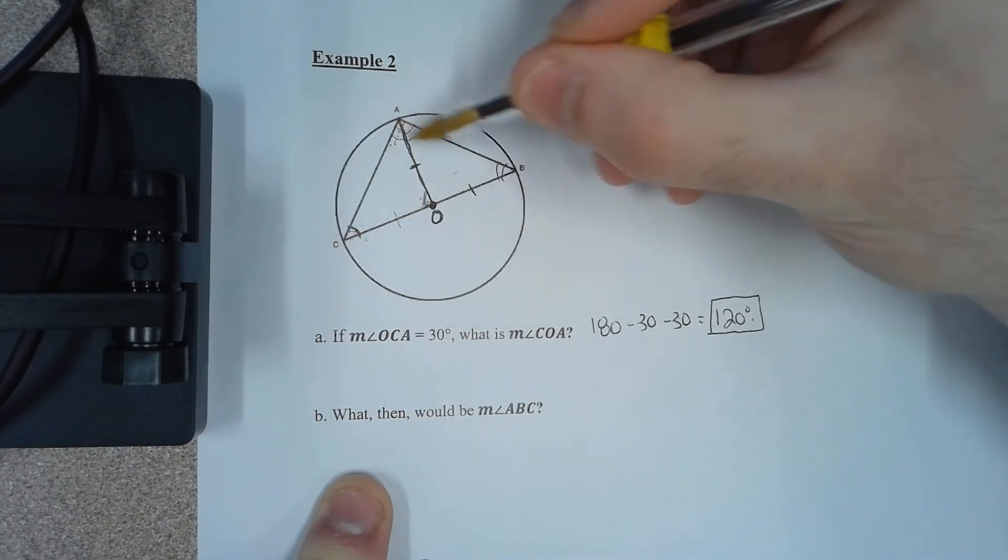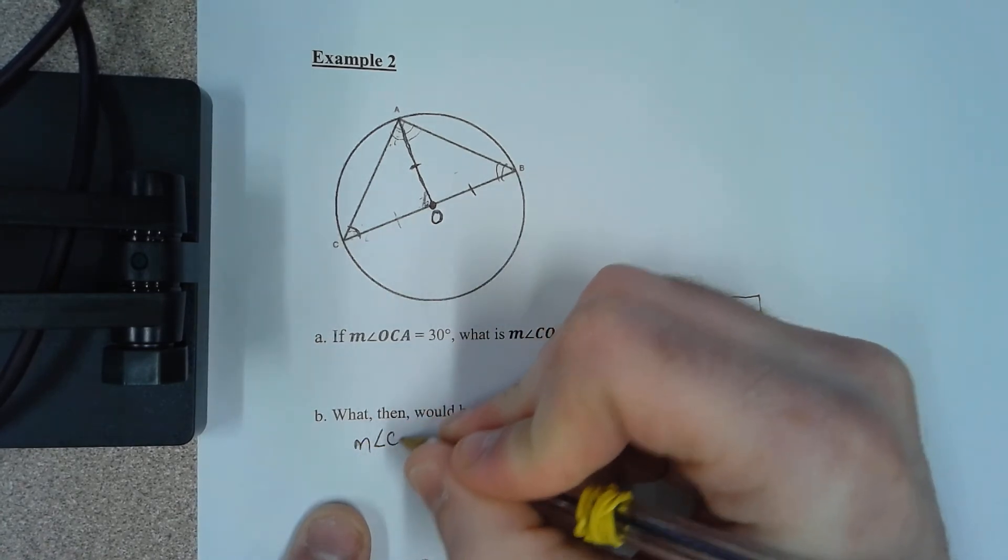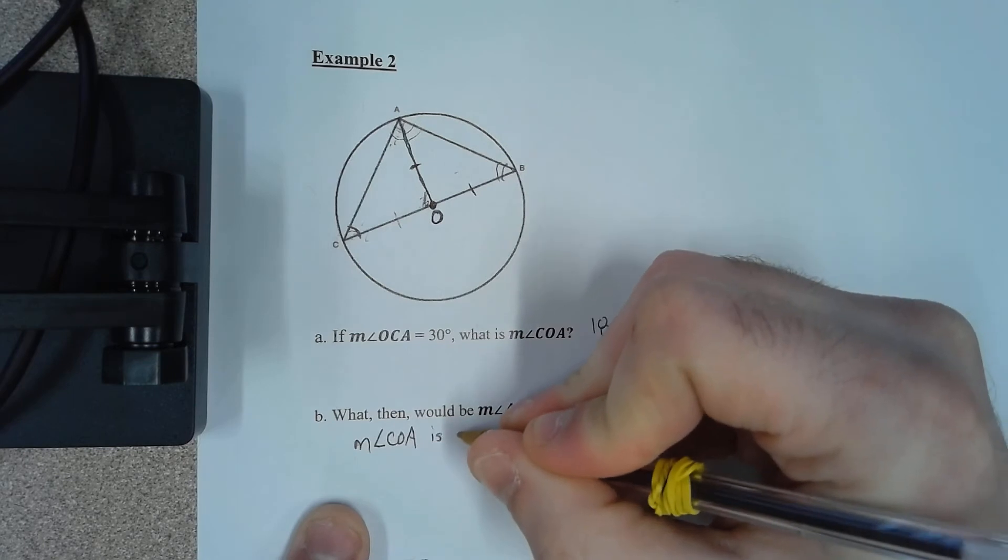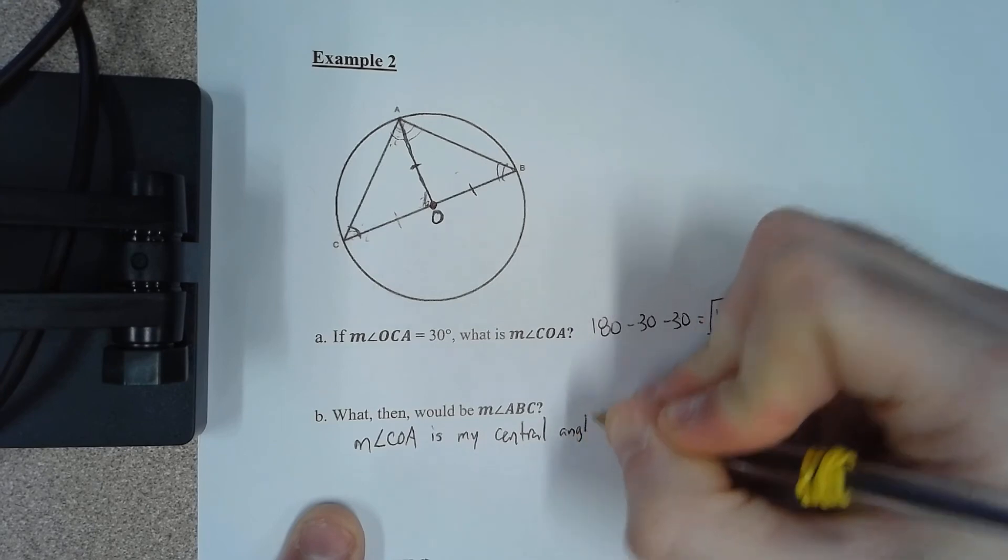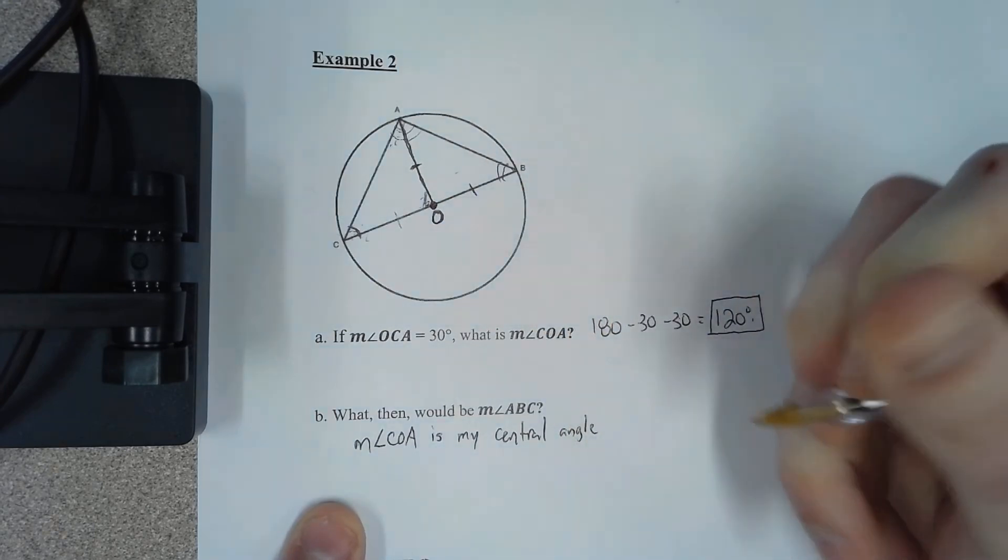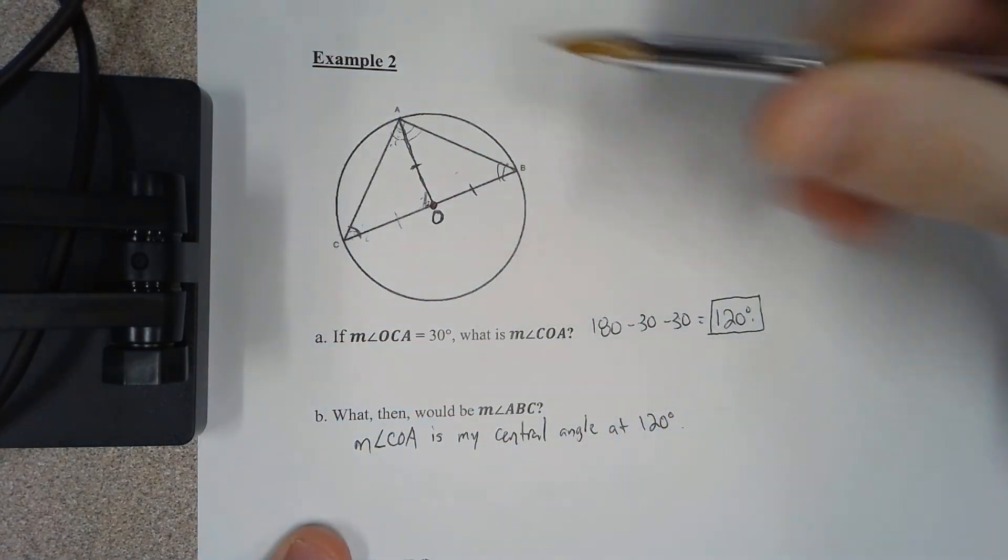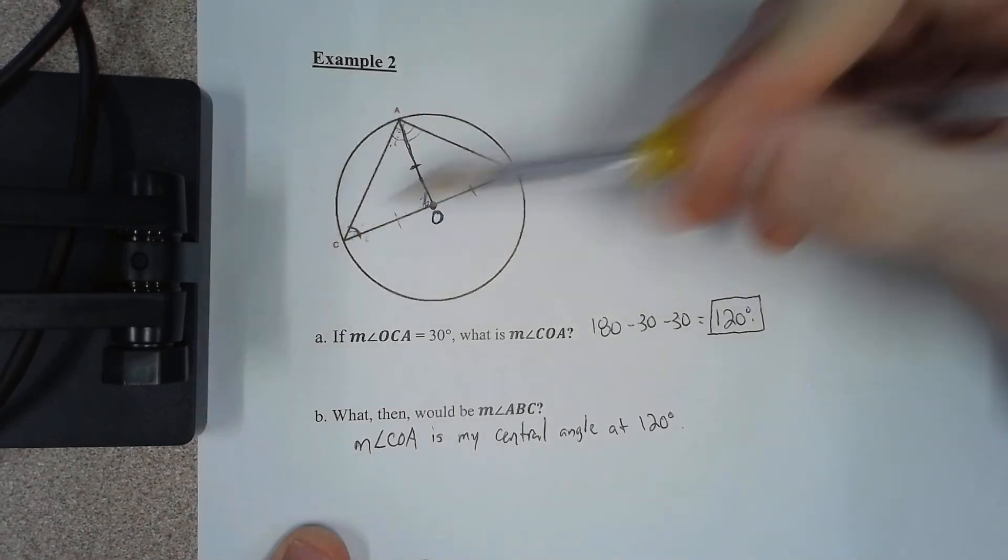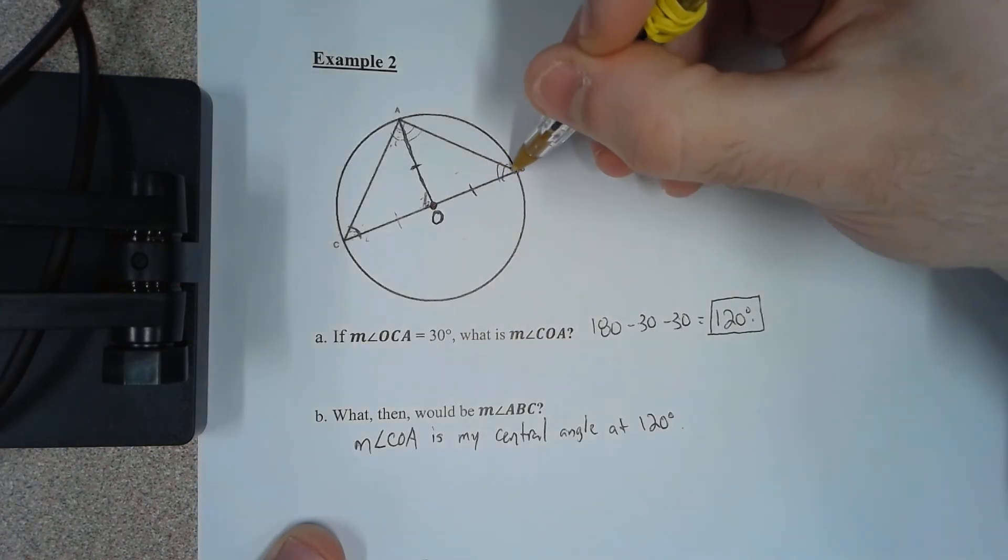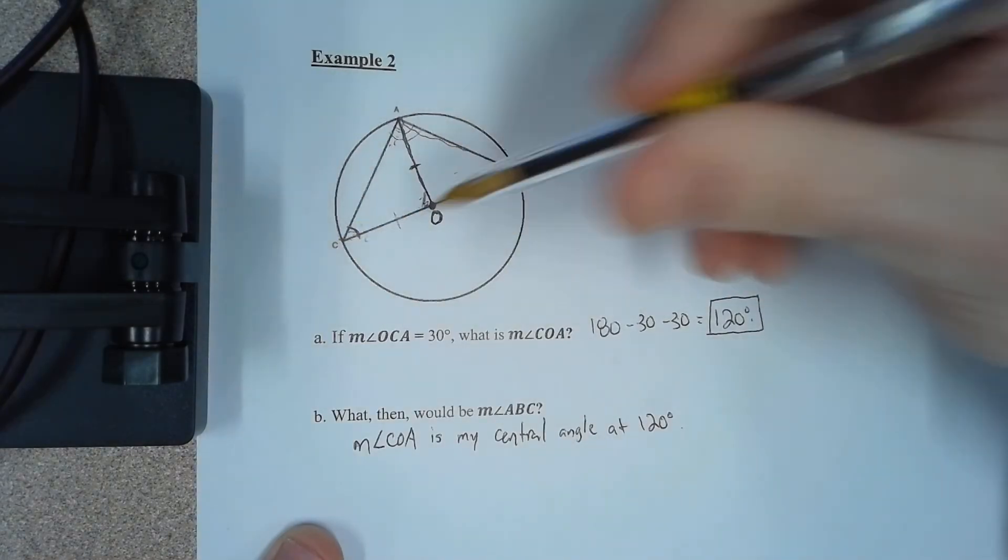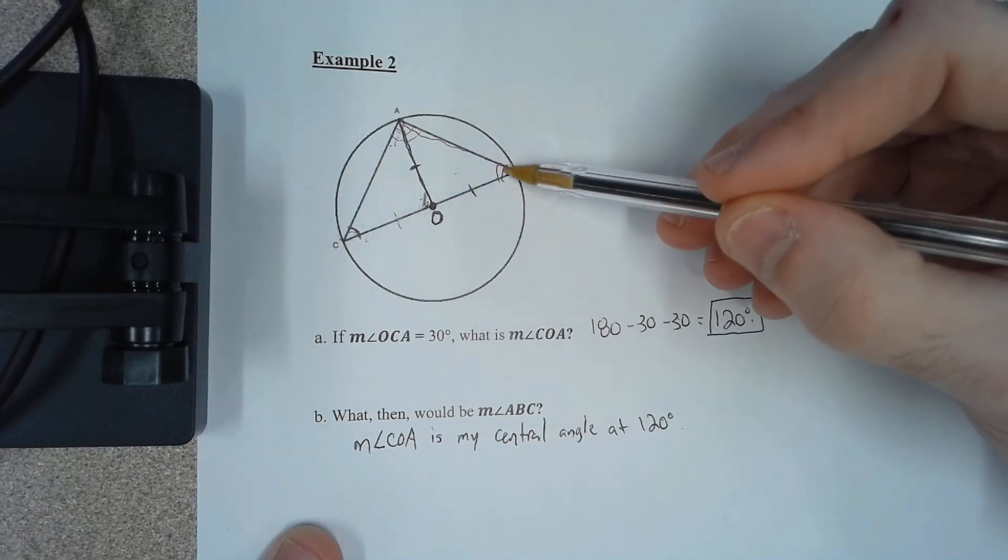Well, COA is my central angle, and it's my central angle because the vertex is in the very center of the circle. Angle ABC is my inscribed angle, and it's inscribed because the vertex is on the circle and it's intersecting the circle at the same points that my central angle is. So that means this angle is going to be twice what this angle is.